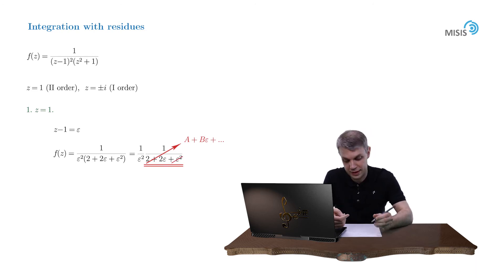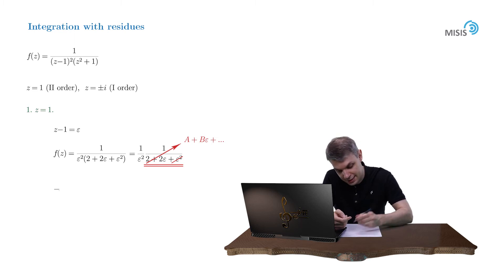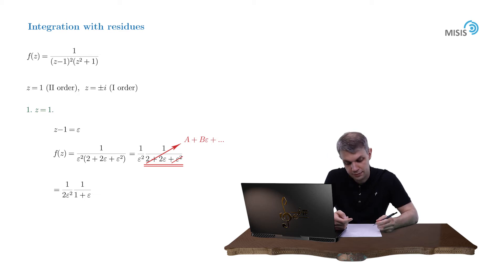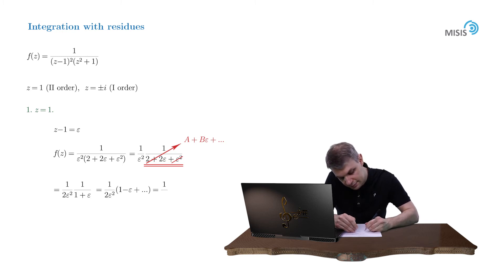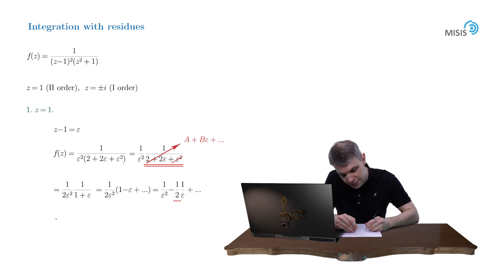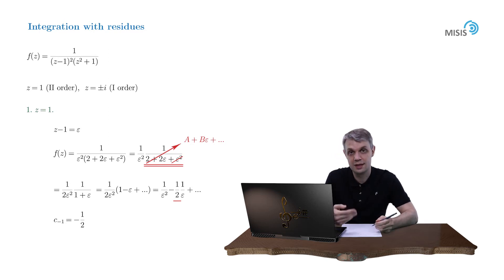The expression simplifies to (1/(2ε²)) · 1/(1 + ε). We perform a simple geometric expansion to first order in ε: (1/(2ε²))(1 − ε + …). Our c₋₁ coefficient is −1/2. Hence we obtain the residue at z = 1 is −1/2.